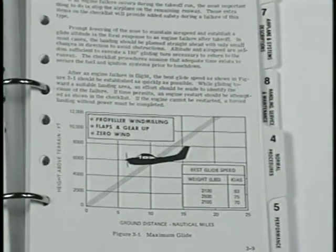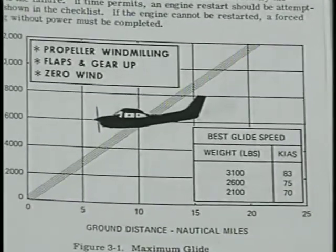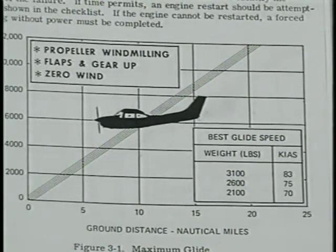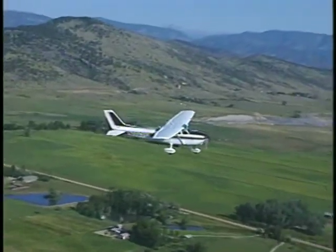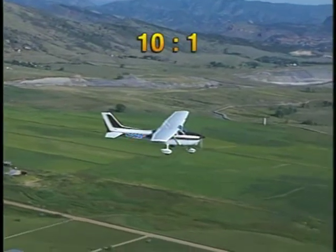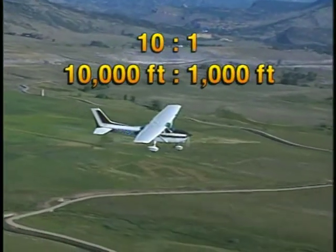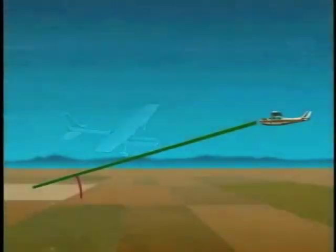The best glide speed is published in the Pilot's Operating Handbook. For example, the best glide speed for this airplane at 2,600 pounds is 75 knots with the propeller windmilling, flaps and gear up in calm wind conditions. Glide ratio represents the distance an airplane will travel forward without power in relation to altitude loss. For example, a glide ratio of 10 to 1 means an airplane will travel approximately 10,000 feet of horizontal distance for every 1,000 feet of altitude lost. The angle between the flight path and the horizon is called the glide angle.